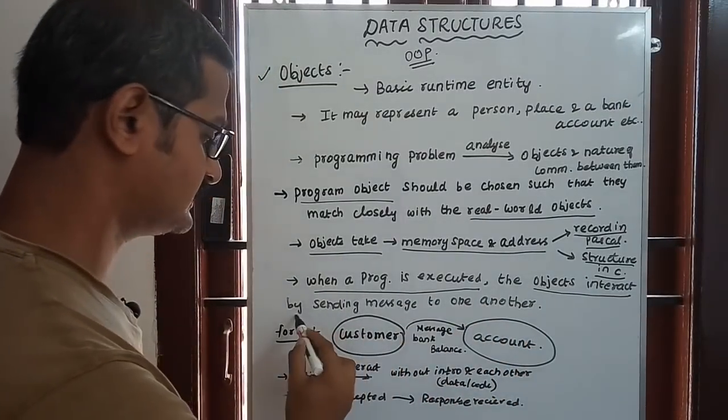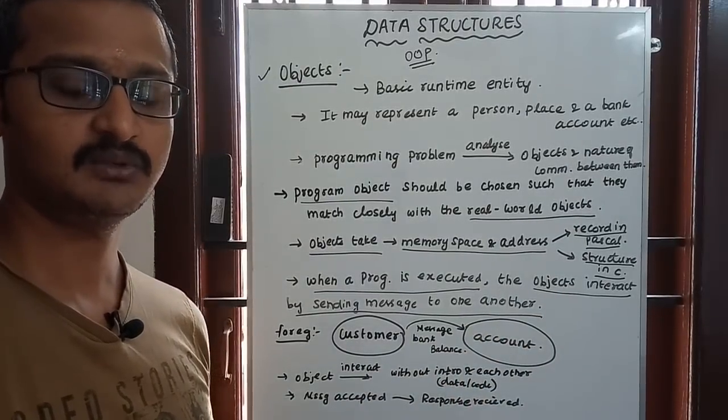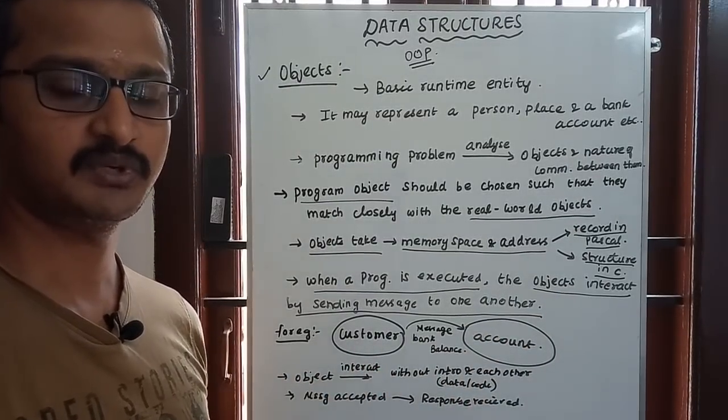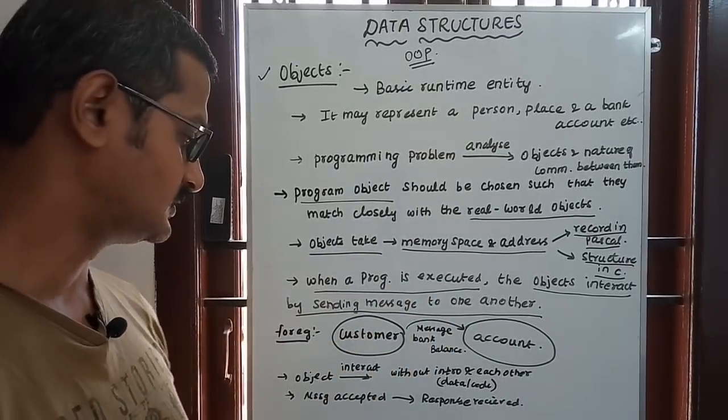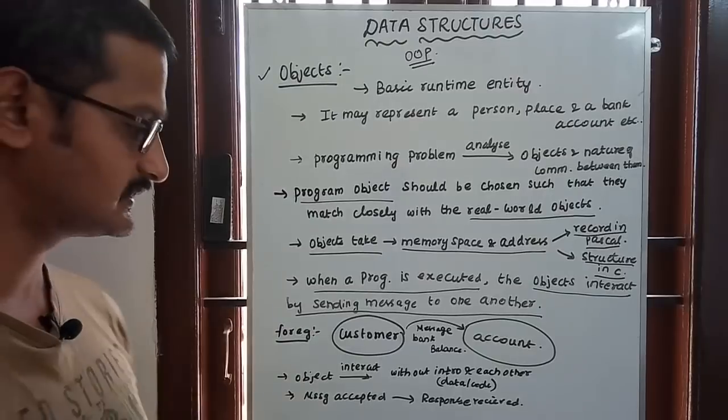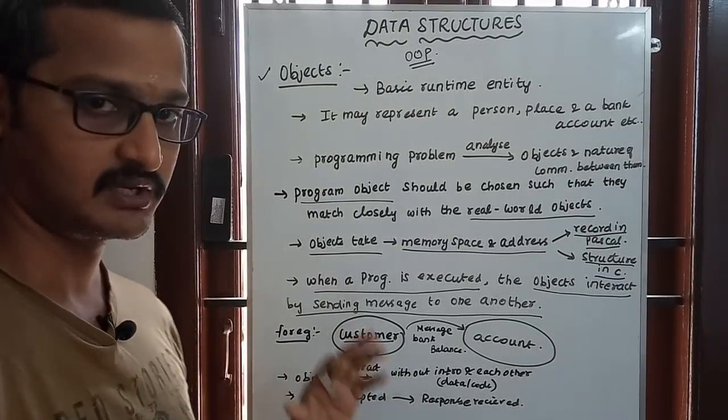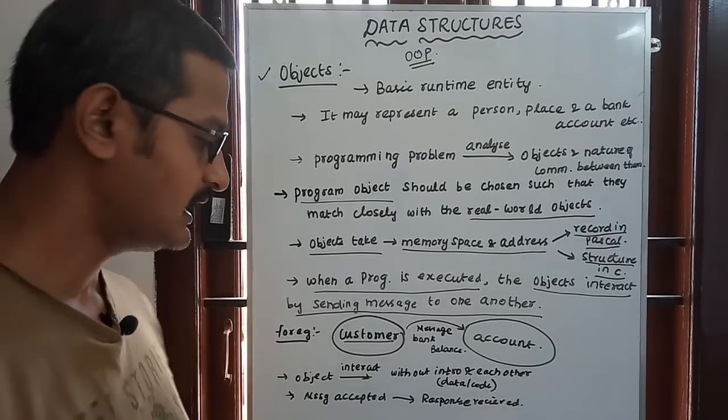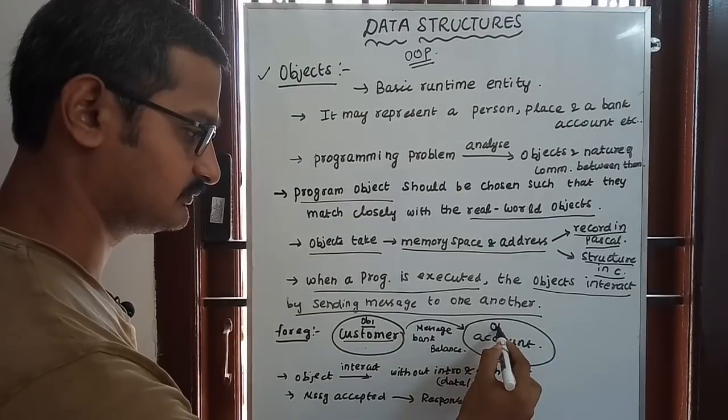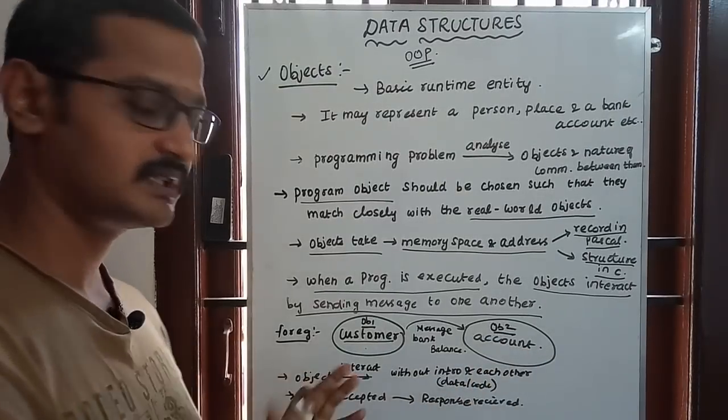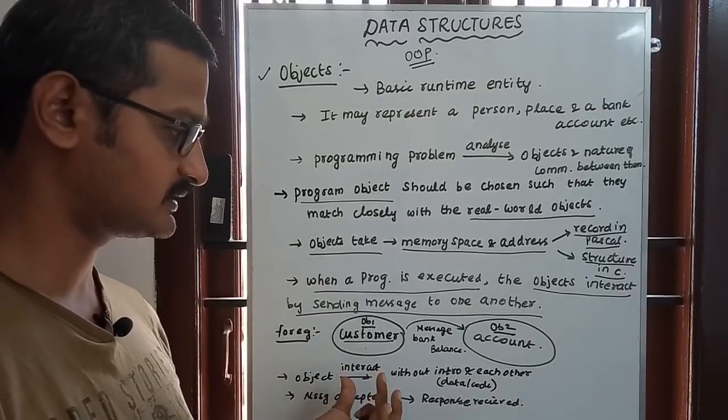When a program is executed, the objects interact by sending messages to one another. They communicate during program execution. A suitable example: a customer and a bank. The customer is object one, the bank is object two.